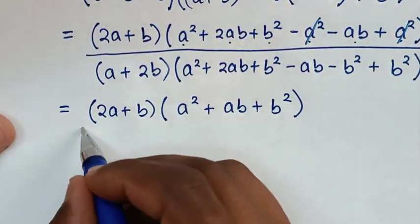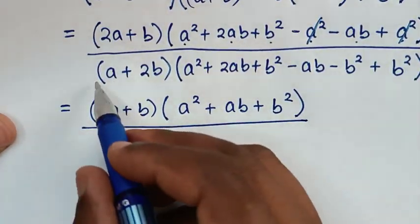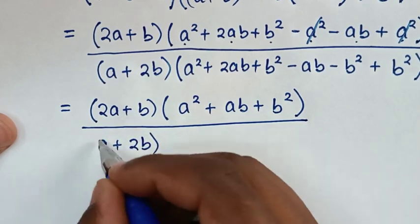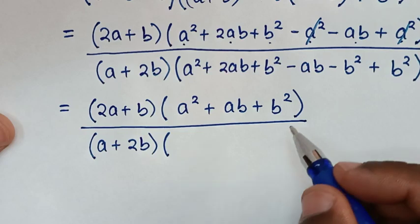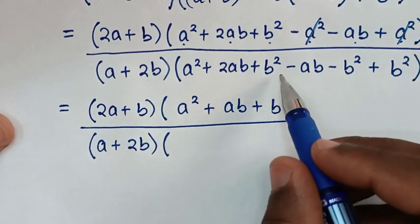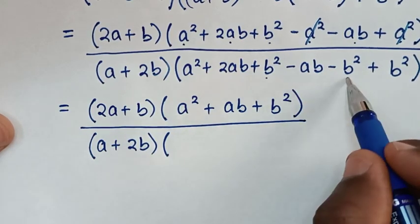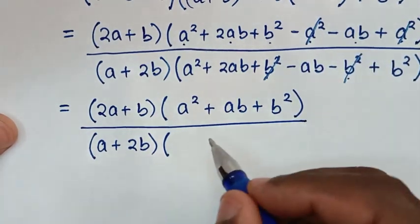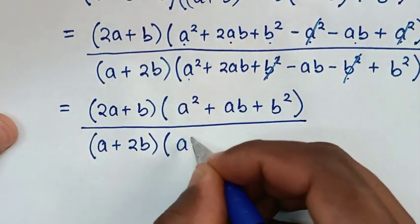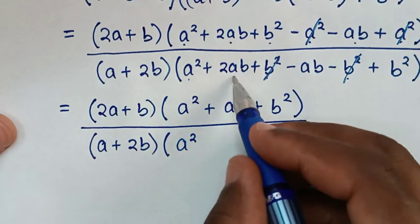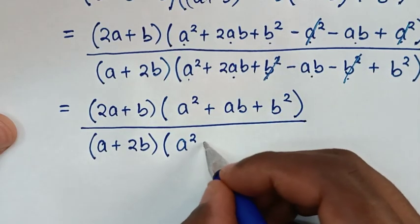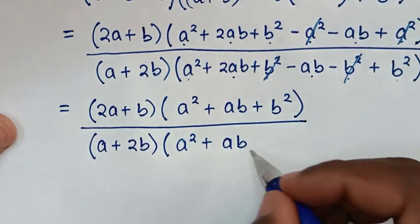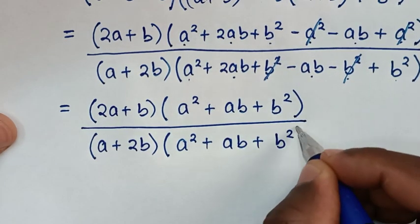Then, in the next step, it will be over this, which is A plus 2B bracket. Then, bracket. In here, we have this B square minus B square. So, this and this will cancel. Then, it will be this A square. 2AB minus AB — it will be AB, so plus AB. Then, plus B square bracket.